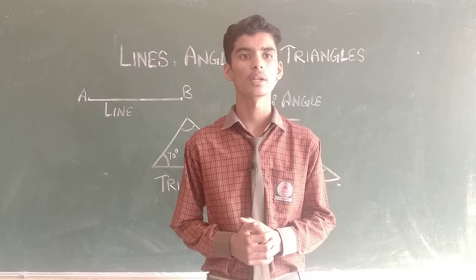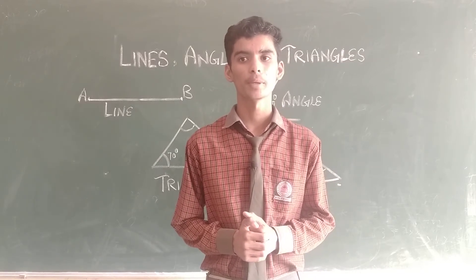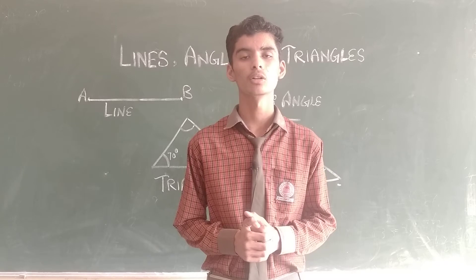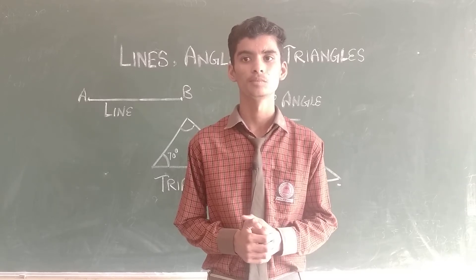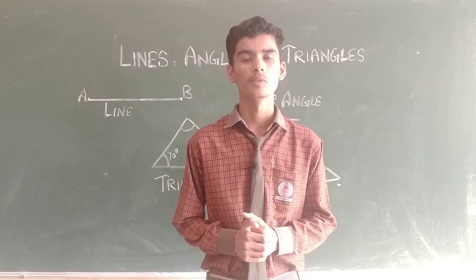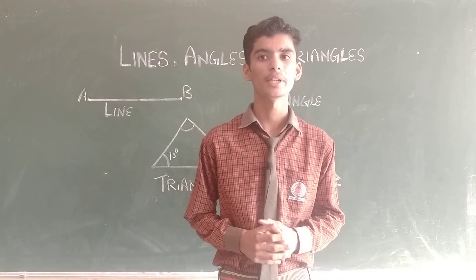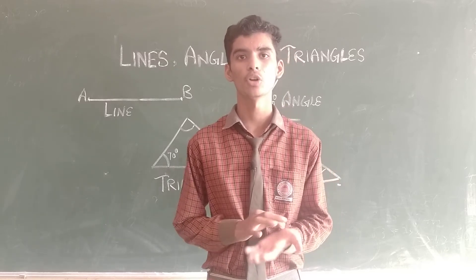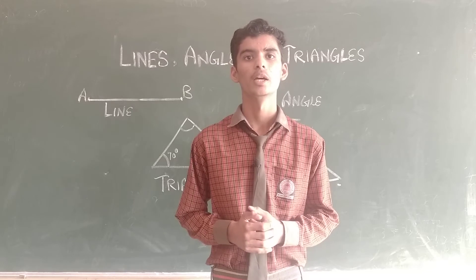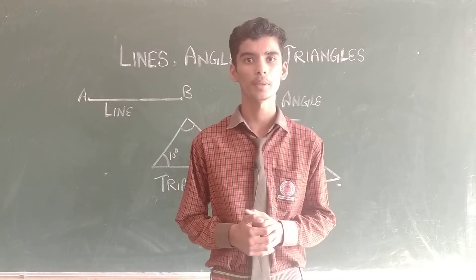Firstly, I will tell you about a line. A line cannot be drawn on a paper and it has no end points — we can only represent it. Now about line segment: a line segment has two end points and it can be drawn on a paper. Now about ray: a ray has one end point and it also cannot be drawn on a paper.